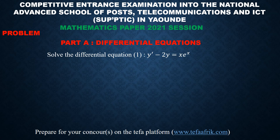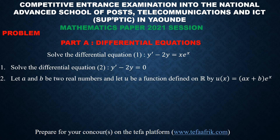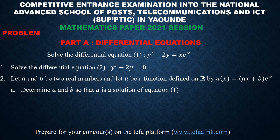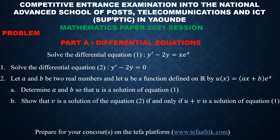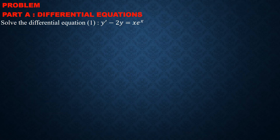The equation reads: solve the differential equation 1, y prime minus 2y equals x·eˣ. The 2021 session mathematics paper was divided into two exercises and a problem, with the problem divided into three parts. The examiners guided students by giving procedures: first, solve the homogeneous equation y prime minus 2y equals 0; then find constants a and b; show a biconditional; and finally deduce the set of solutions.